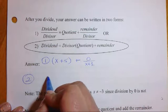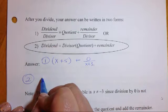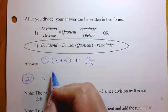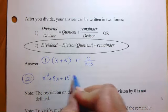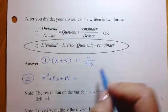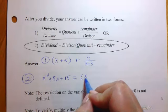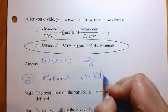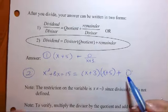Or the second way, which is the dividend equals the, so that's the x squared plus 8x plus 15, is equal to the divisor, which is your x plus 3, times your quotient, which is the answer that we got. And plus our remainder. So our remainder in this case is 0.